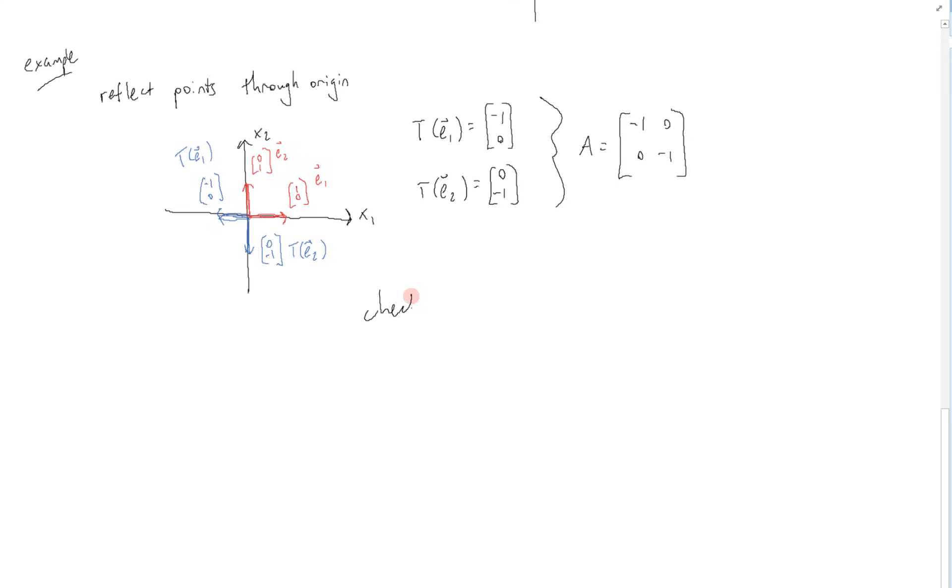So once again, let's perform a check. Let's take our previous point x at (2,3) and see what happens to it under this transformation. So Ax is equal to [-1,0; 0,-1] times our vector (2,3). And we can see that this is equal to (-2,-3). That point is right here. So this is (-2,-3). And we can see that that is exactly a reflection through the origin.